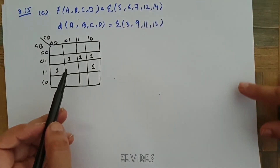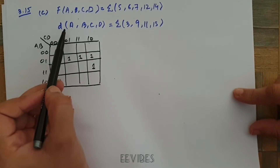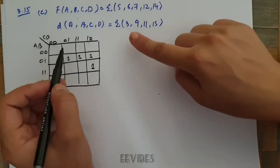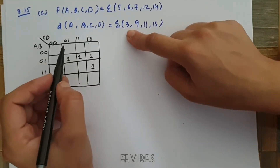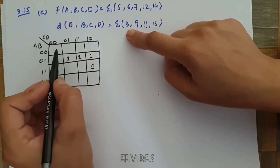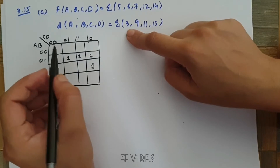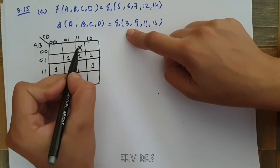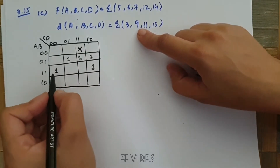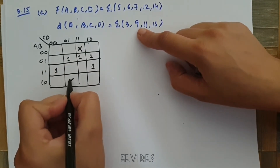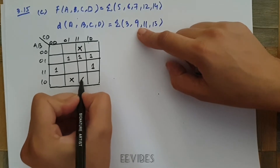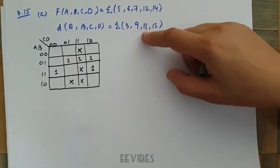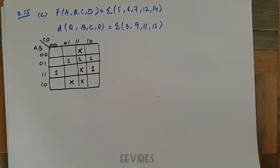The next step is to place the don't care conditions in the K-map. Minterm 3 represents a don't care condition, so I will place a cross there. The don't cares at minterms 3, 9, 11, and 15 are marked with cross signs.